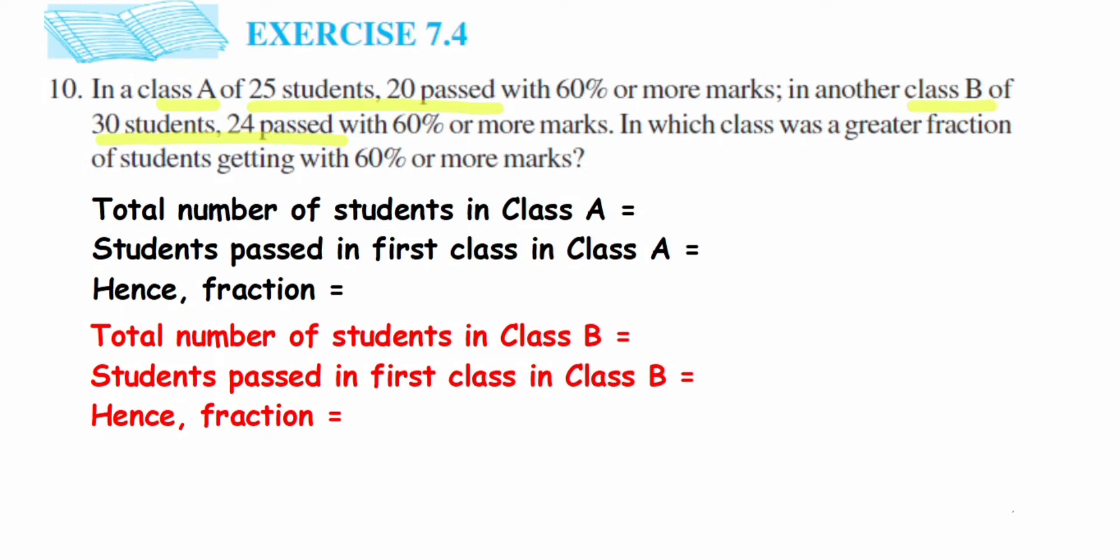Let us write down what we know from the question. So first, I'm going to talk about Class A. In Class A there are total 25 students and the number of students who passed are 20. So the fraction will become 20 upon 25. I'm going to reduce this and just cancel this in 5's table: 5 fours and 5 fives. So the fraction will be 4 upon 5.